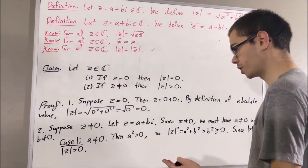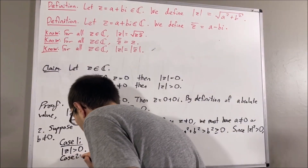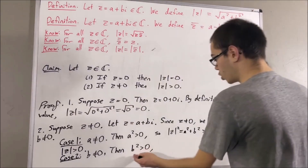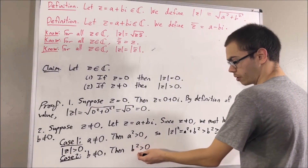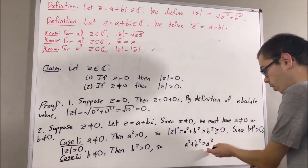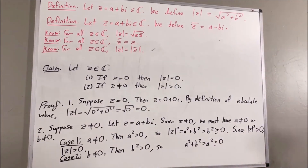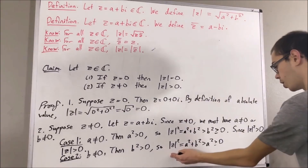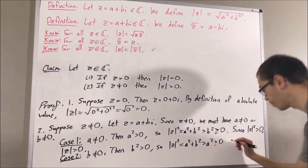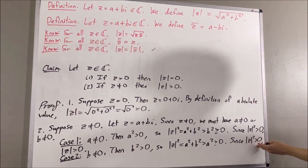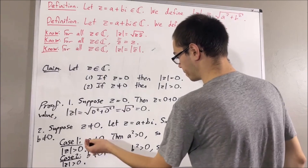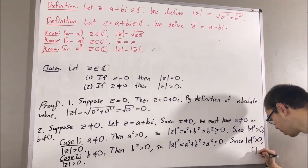Now consider the case where b is not equal to zero. Since b is not equal to zero, b squared is strictly greater than zero. Adding a squared to both sides, a squared plus b squared is strictly greater than a squared, and a squared is greater than or equal to zero. By definition, a squared plus b squared equals the absolute value of z squared, so the absolute value of z squared is strictly greater than zero. Taking the square root, the absolute value of z is strictly greater than zero. In either case we have the absolute value of z is greater than zero, completing the proof.